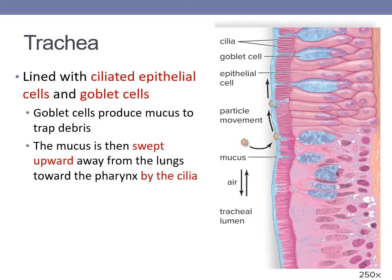The trachea is also lined with ciliated epithelial cells and goblet cells. The goblet cells produce mucus that traps any debris that has made its way down to the lower respiratory tract. The hair-like cilia move to sweep the mucus and trapped debris upward and out of the throat so that it doesn't move deeper into the lungs. Together, the ciliated epithelial cells and goblet cells make up the mucociliary escalator, which traps debris and moves it upward and out of the body, just like an escalator.